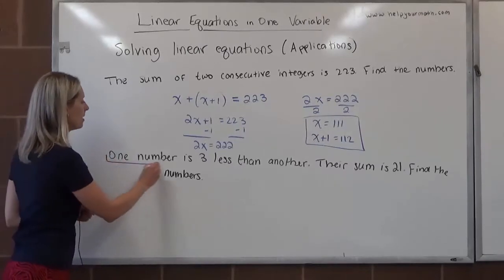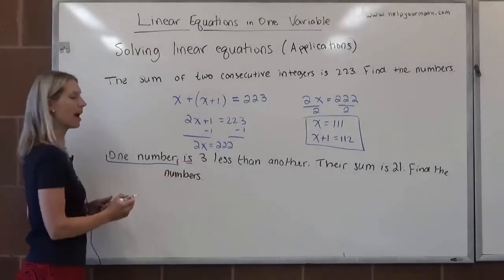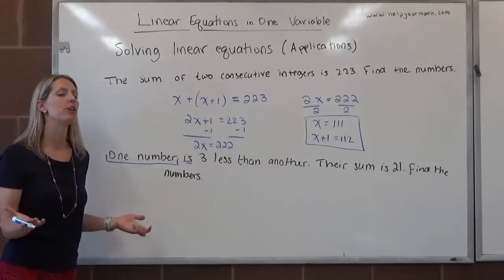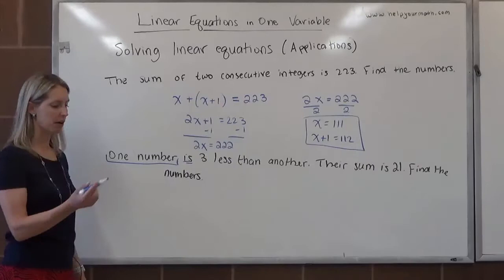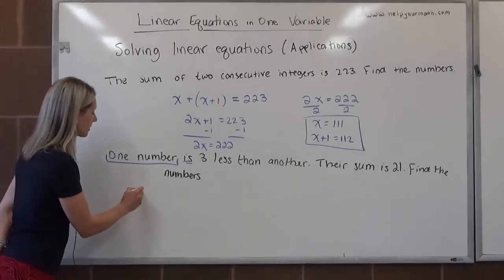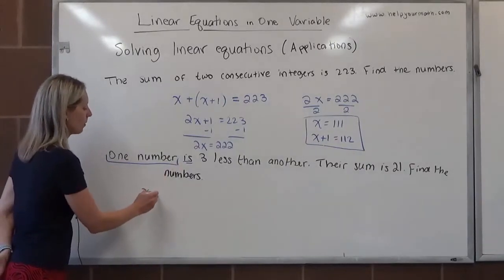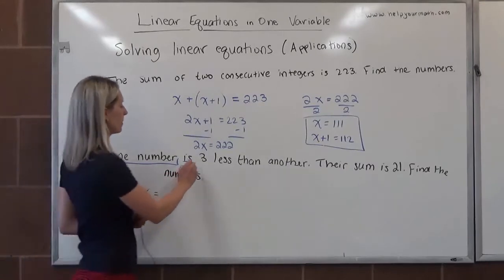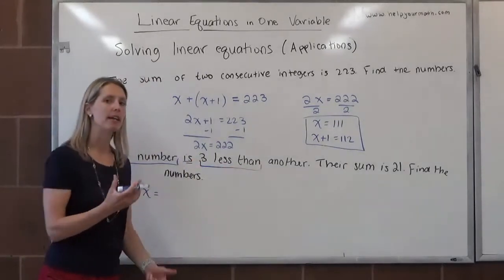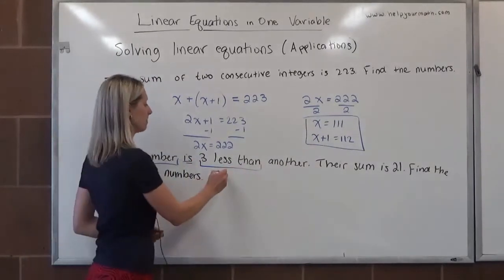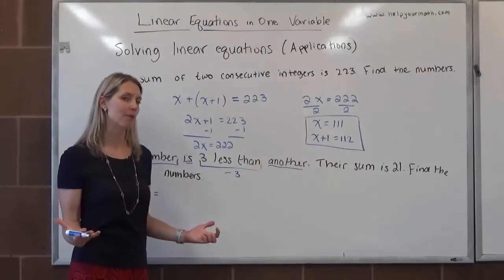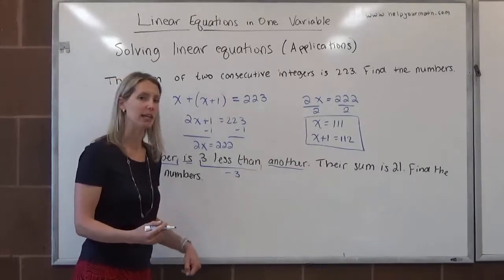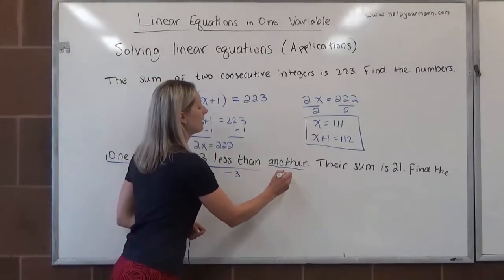We have one number is, is implies equals. One number, do we know what that number is yet? We don't. So we're going to use a variable to represent our unknown, most commonly we use x. One number is, so one number equals 3 less than, 3 less than implies that we're taking 3 away. So this is minus 3, another, another we are to assume another number. Do we know what this number is? No, it would tell us if we did and we don't. So we might say, why?